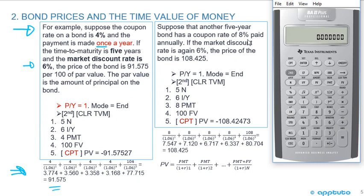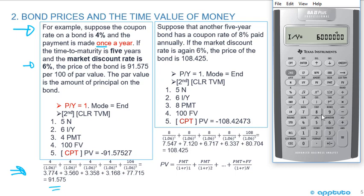Now let's look at the case where the coupon rate is 8% and the market discount rate is 6% — we can see it's going to sell at a premium. On the calculator: five N, six I/Y, eight for the payment, and 100 for the future value. Computing the present value, we get 108.42.